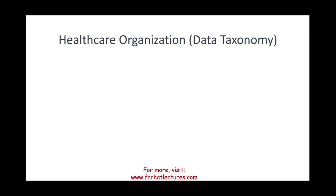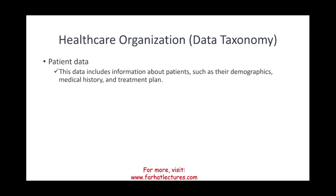Now let's move from data classification to data taxonomy. Data taxonomy is basically grouping the data. For example, we could have a patient data group. This data could include information about patients such as their demographics, medical history, and treatment plan — this is how we organize the data itself. On the prior slide we gave data a level of sensitivity; now we will see how they both fit together.